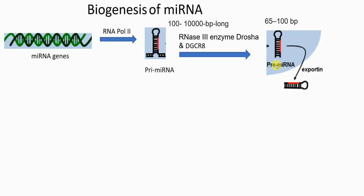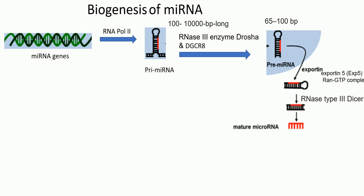From the nucleus, the precursor micro RNA is exported through the nuclear pore to the cytoplasm by Exportin-5 and the RAN-GTP complex. In the cytoplasm, this precursor micro RNA is recognized by another RNase III enzyme called DICER, which cleaves it further, producing a duplex of micro RNA.